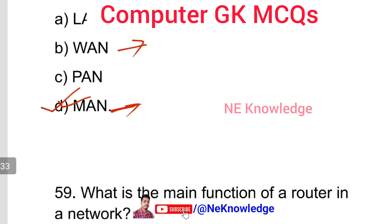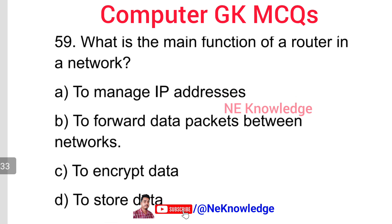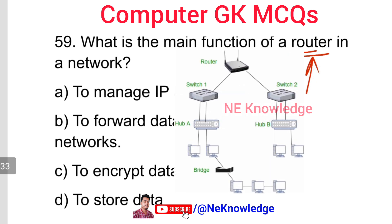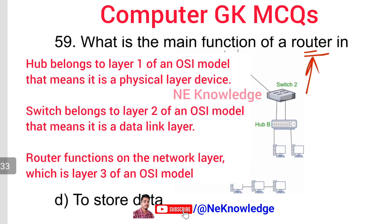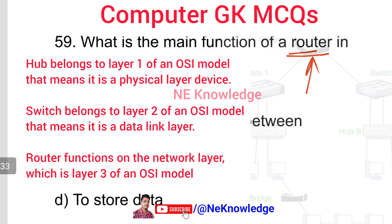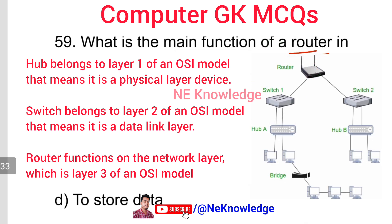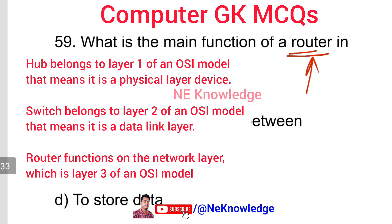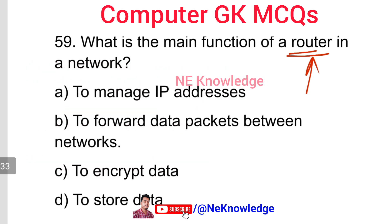Question number 59: What is the main function of a router in a network? A router is a networking device. It operates at the network layer of the OSI model. The main function of a router is to forward data packets between networks. Option number B is the correct answer.